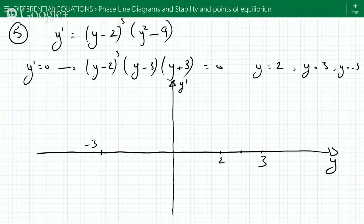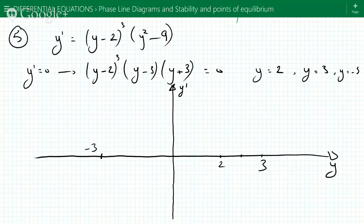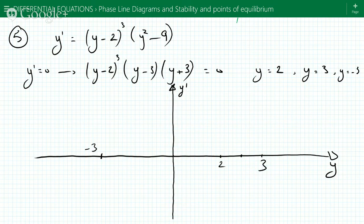This graph is degree five. The fifth-degree graph looks the same as the third-degree — same end behavior, same orientation — except with the fifth we have four turning points. So if y-prime is zero, we get negative 2. We're going to cut the y-prime axis somewhere here.